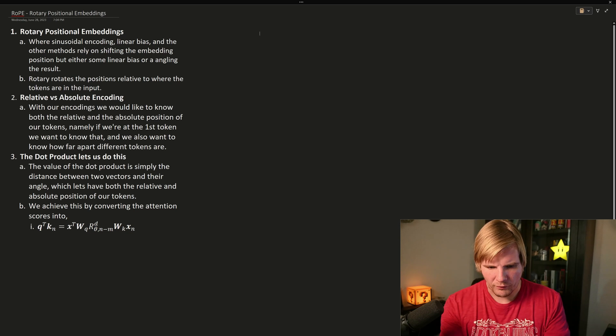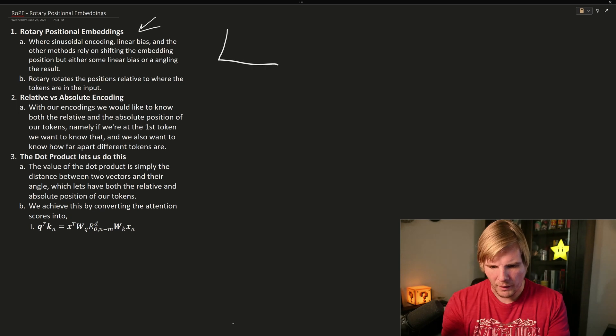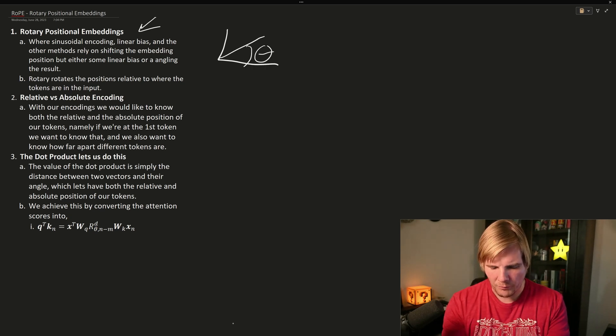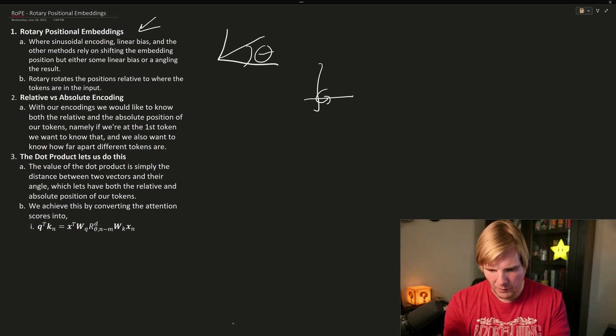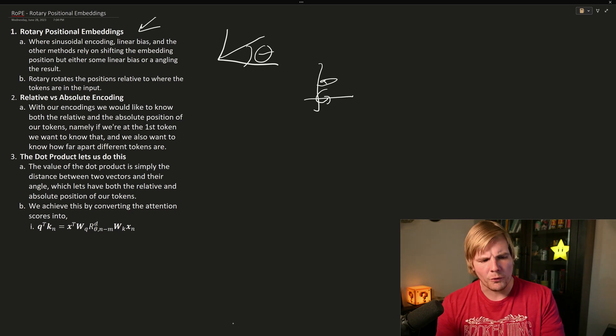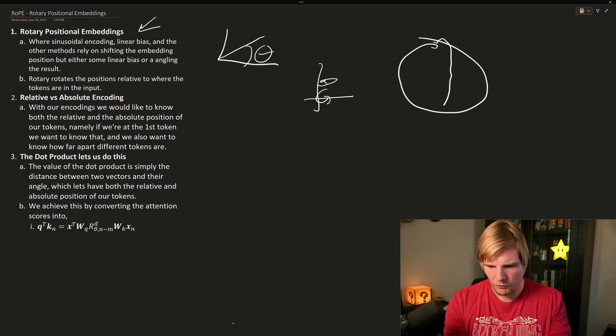So what are rotary positional embeddings? Well, just like sinusoidal or linear biases, we're wanting to know something about the positionality of our tokens. So we want to know, are we at the first, or the second, or the third token? But with these, we can only know something about the position based on some angle on a single axis. But what we'd like to be able to do is embed slightly more information than that, and do it by perhaps a rotation, where if we have two axes, we'd like to be able to rotate around both of those axes. So if we remember what embedding space is, it is a space telling us who is related to who. So if we imagine it on a sphere, we could have things clustered here.